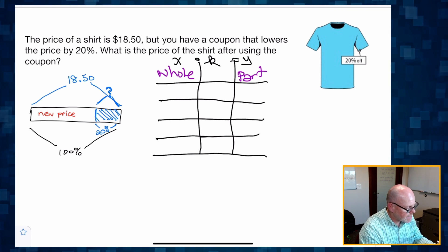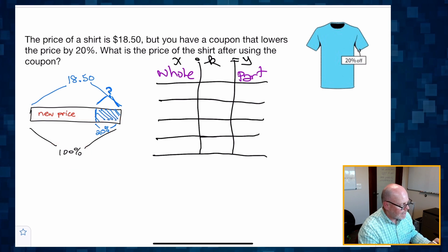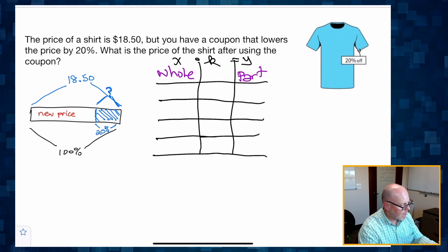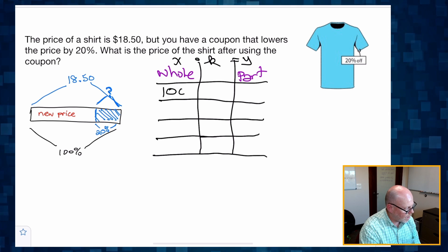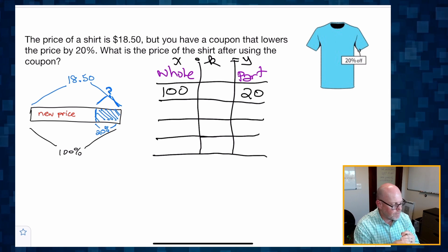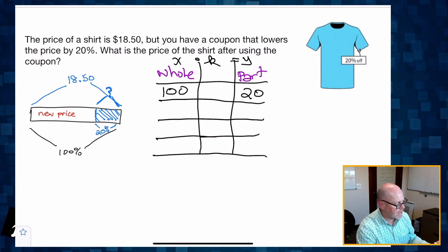And then let's start filling it in. So I can see that 100% is a whole and its associated part is 20% right here. So 100% is a whole and its associated part is 20. So there we go.